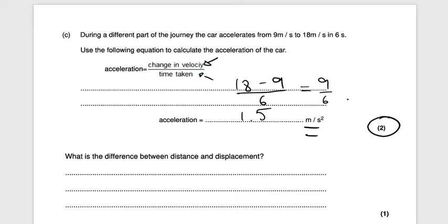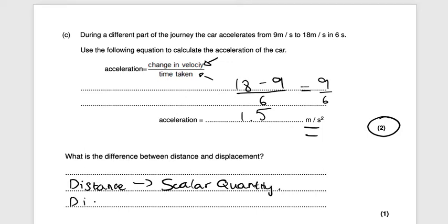What is the difference between distance and displacement? It's only worth one mark, so you need to give only one reason. The simplest reason is that distance is a scalar quantity while displacement is a vector quantity, and that would get you one mark.